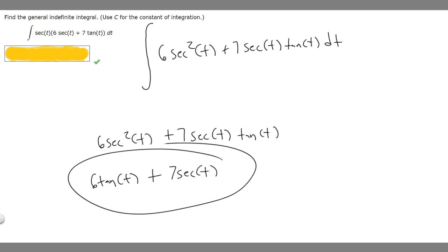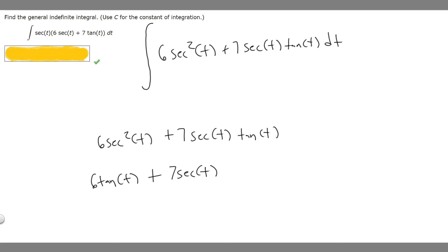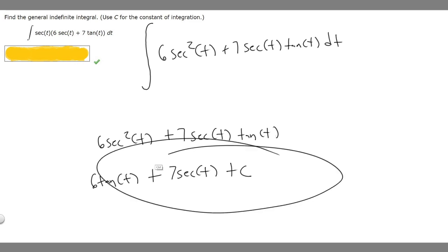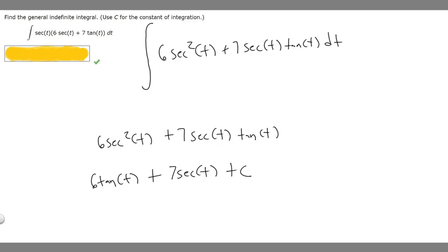So now we have the full antiderivative, and we have to add the constant at the end, so we add plus C. The final answer to this problem is 6 times tangent of t plus 7 times secant of t plus C.